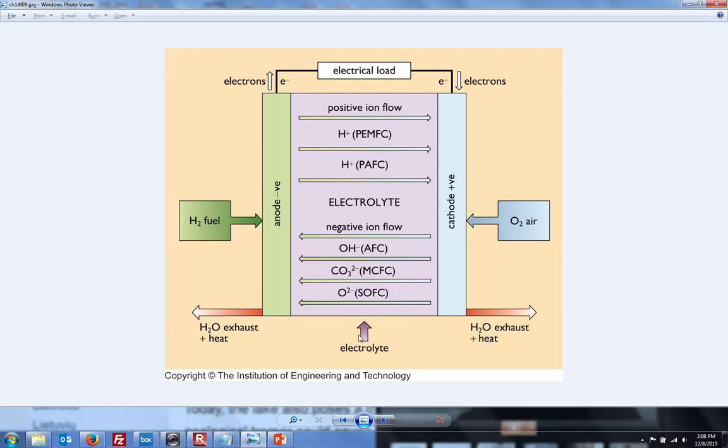Oxygen also comes in from the air towards the cathode, and what are you left with? Water and heat. There's your second law of thermodynamics, in effect. And then, obviously, your electricity. So hydrogen and oxygen come in, electricity, heat, and water come out.